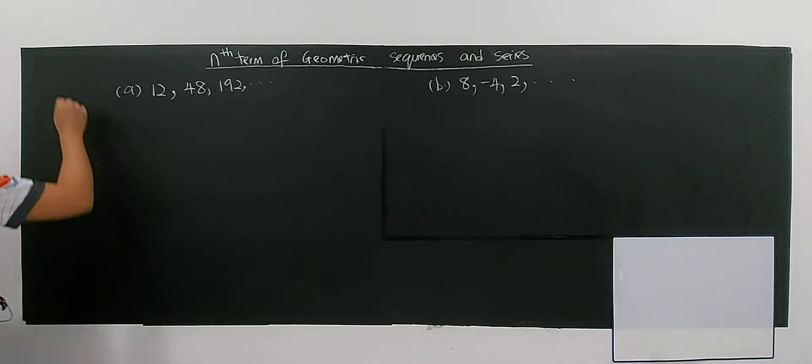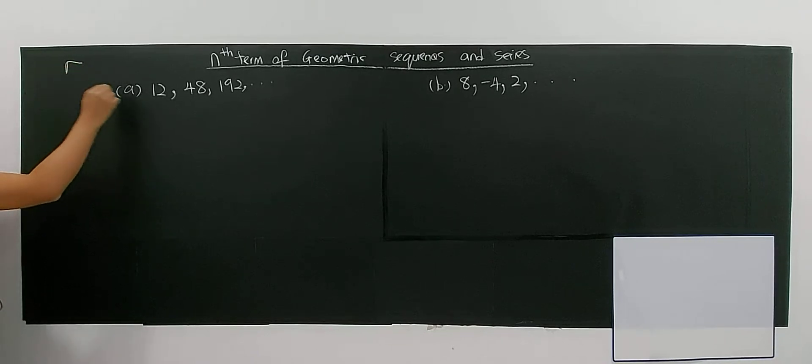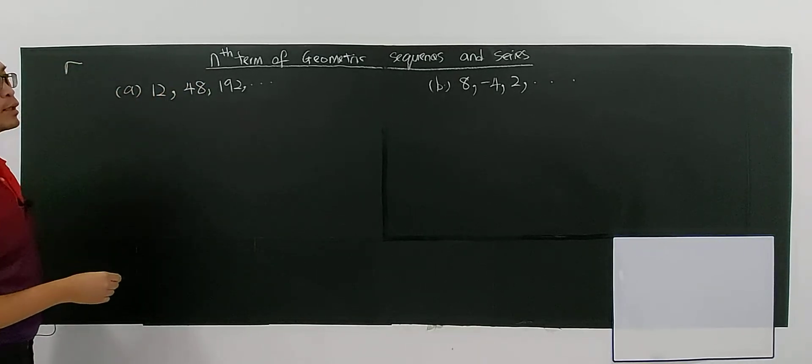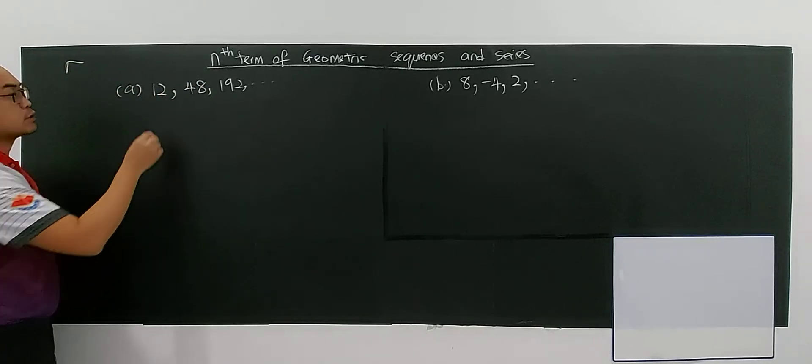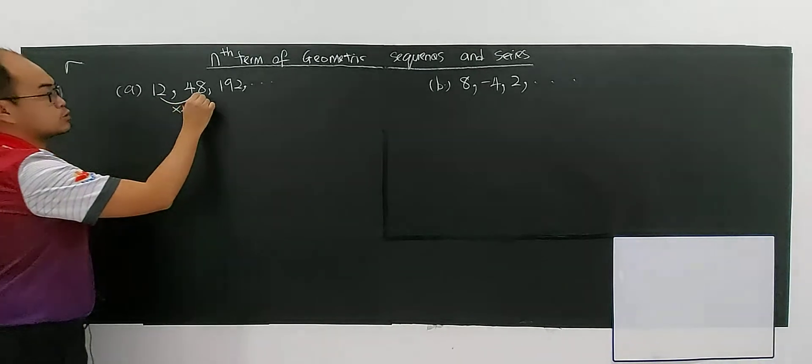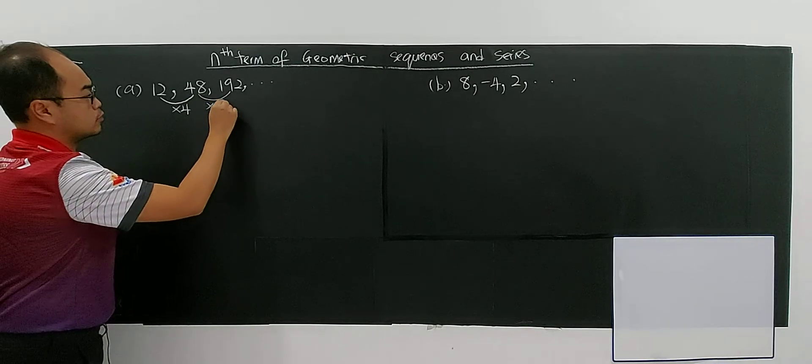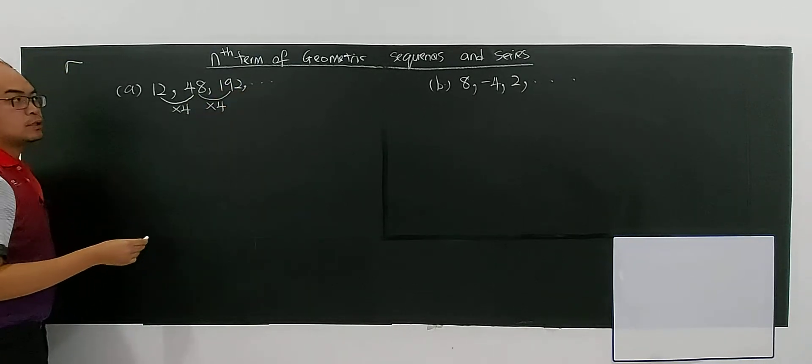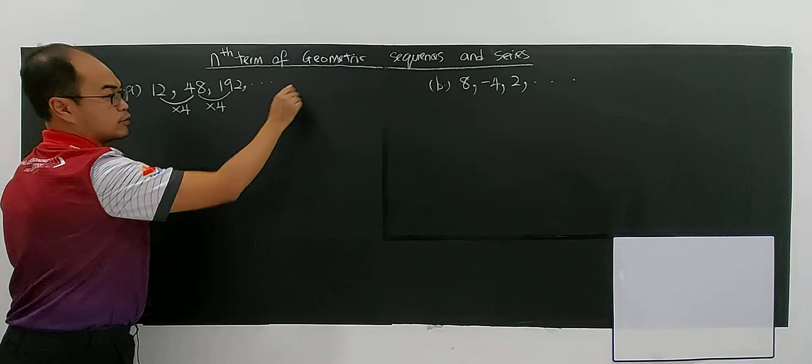The common ratio refers to R. This is clearly a geometric sequence because you see that this number is multiplied by 4, and this is also multiplied by 4 to get 192. It keeps multiplied by 4.